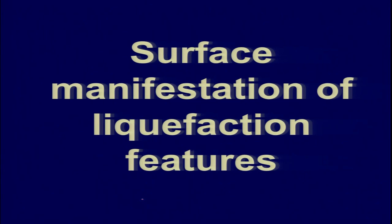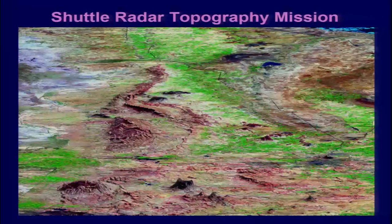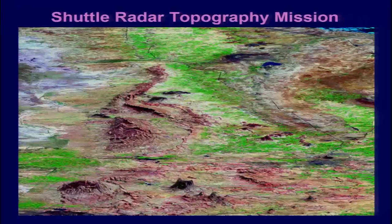Surface manifestations of liquefaction features were observed from the Shuttle Radar Topography Mission data just after the 2001 Bhuj earthquake. In most areas where near-surface water-saturated sediments were available, water was poured out in the Great Rann of Kutch. Many people started talking about the ancient dry bed of the Saraswati river being revived because of this water coming to the surface. But this was a temporary phenomenon, not a permanent one — strong ground shaking compacted the porous saturated material, and the high pore water pressure ejected water out onto the surface.